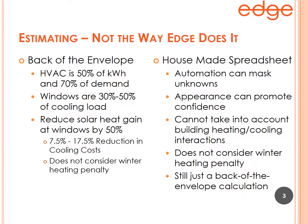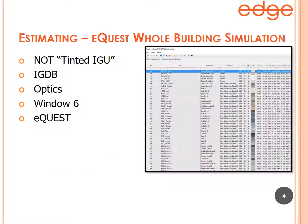At the end of the analysis, it's still just a back-of-the-envelope calculation. It can be more sophisticated than simply multiplying 50% × 30% × 50%, but in the end it's still just a back-of-the-envelope calculation. Contrast that with how Edge does its estimating.